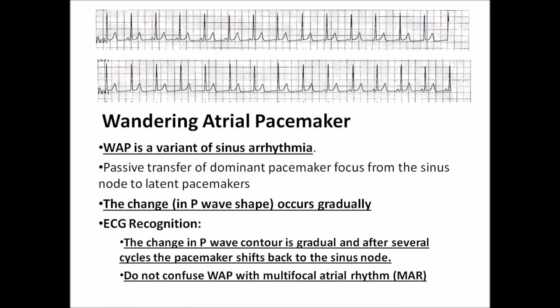Wandering atrial pacemaker, or WAP, is a variant of sinus arrhythmia. There is a passive transfer of the dominant pacemaker focus from the sinus node to latent pacemakers. The change in P wave shape occurs gradually, so there is only one pacemaker in control at a time. It is recognized on the surface EKG with a gradual change in P wave contour over several cycles, after which the pacemaker shifts back to the sinus node. Do not confuse WAP with multifocal atrial rhythm. These 10-second lead 2 strips were intentionally printed to illustrate the gradual change of P wave contour and morphology.